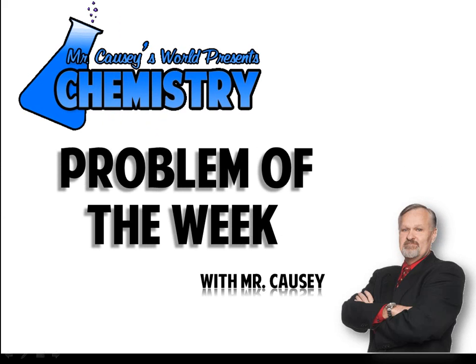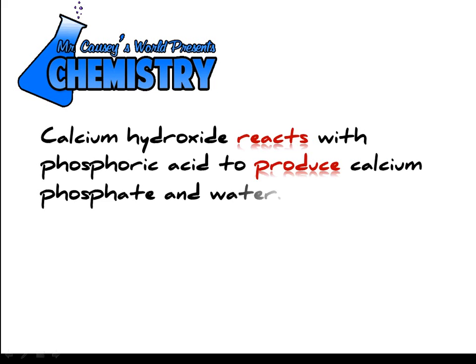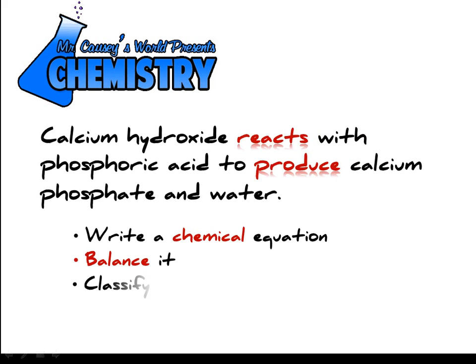Howdy everyone, Mr. Cozzi here with another problem of the week. Let's get right into it. Calcium hydroxide reacts with phosphoric acid to produce calcium phosphate and water. Write a chemical equation, balance it, and classify the reaction.